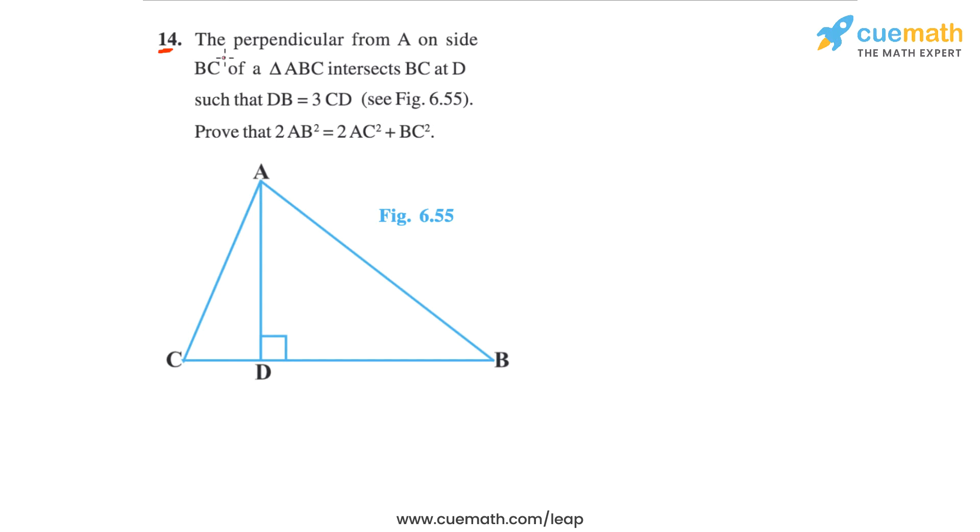Question 14 of this exercise says the perpendicular from A on side BC of a triangle ABC intersects BC at D such that DB equals 3CD, as shown in this figure.